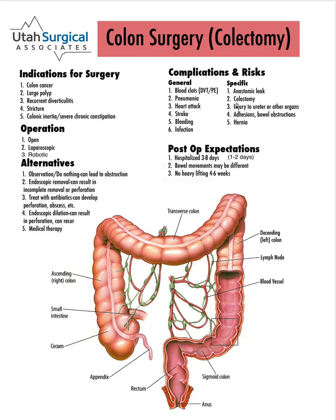A colostomy is one name for a bag — it's when the colon comes out into the bag. It's pretty uncommon for that to happen at the first operation, but sometimes there are reasons for it. For example, if somebody has a tumor very low in the rectum, that anastomosis is also going to be very low, and those have a much higher risk of leaking. So usually we will bring the small intestine out in a bag called an ileostomy, so all the intestinal contents come out into the bag, and this part of the colon is left empty for several weeks to months while it heals. Often those bags can be reversed.